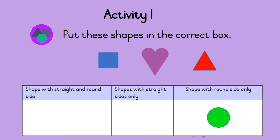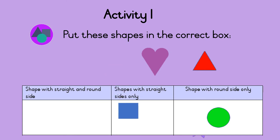Now look at the sides of the square. The square has four straight sides. So the square goes into the box for straight sides only.